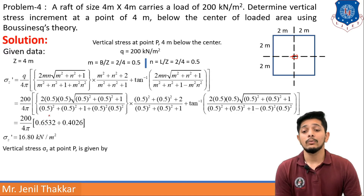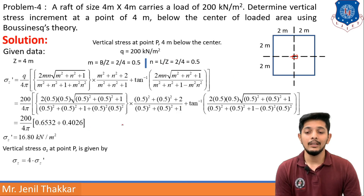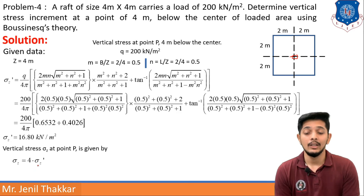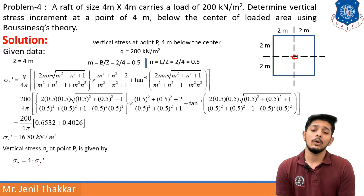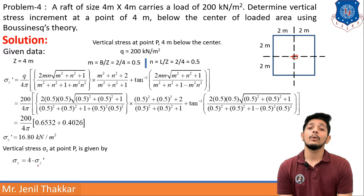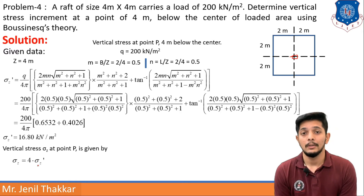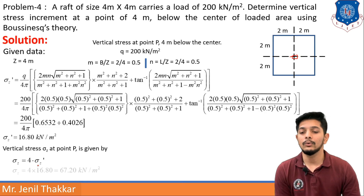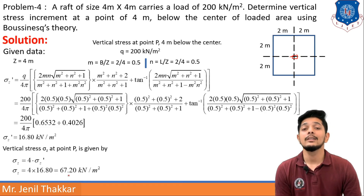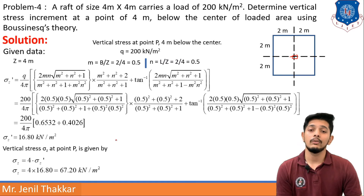Now let us find the vertical stress σz at point P, given by σz = 4 × σz'. The σz' value was for only one portion, but actually there are 4 portions. So we have to multiply by 4. Therefore σz = 4 × 16.80 = 67.20 kN/m². That is how you calculate in the case of a raft.